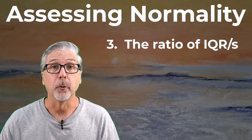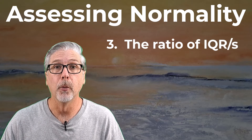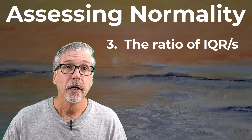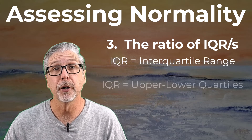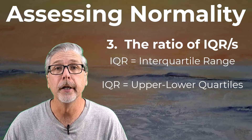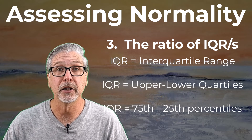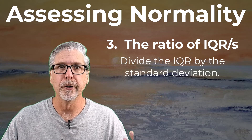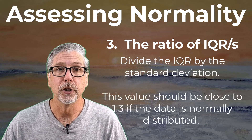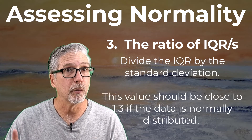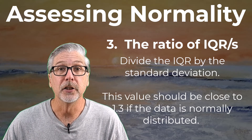On to number three. In this technique, we calculate the value of IQR divided by S and see how close it is to 1.3. The IQR is the interquartile range — the difference between the upper and lower quartile, or more simply, the 75th and the 25th percentile. So the difference between those percentiles divided by the standard deviation. 1.3 is a value characteristic of normal curves, and by looking at these numbers from the printout and doing some simple calculations, we get another method of determining whether our data is normally distributed.